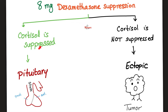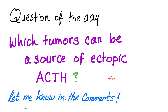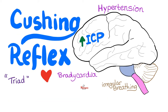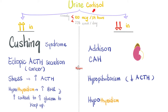Quick note: the pituitary tumor will be suppressed with the high dexamethasone dose, but usually does not suppress with the lower dose. Causes of high cortisol in the urine: Cushing syndrome — could be from the adrenal cortex (primary hypercortisolism), from the anterior pituitary (Cushing disease), or from an ectopic cancer as a paraneoplastic syndrome, such as small cell lung cancer.